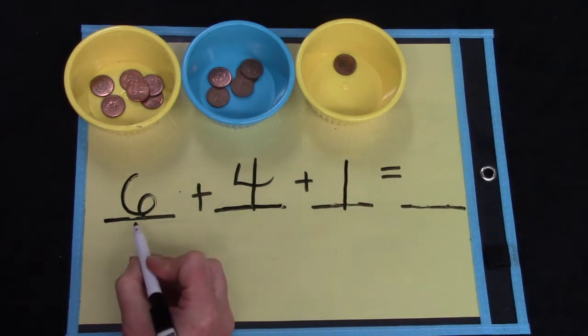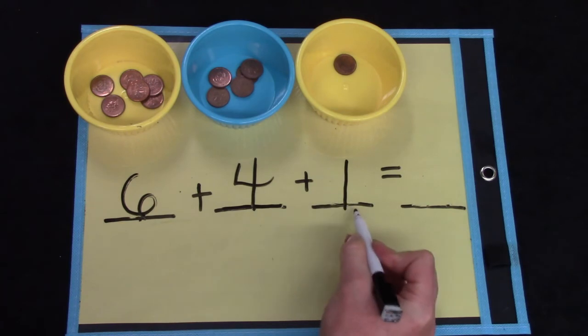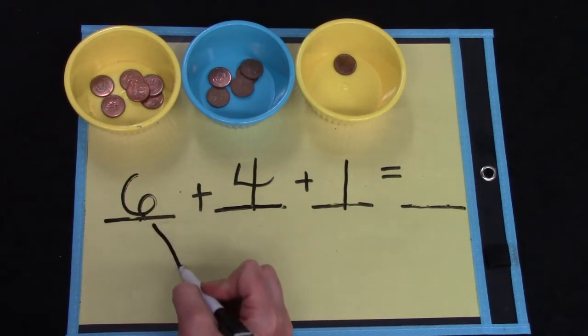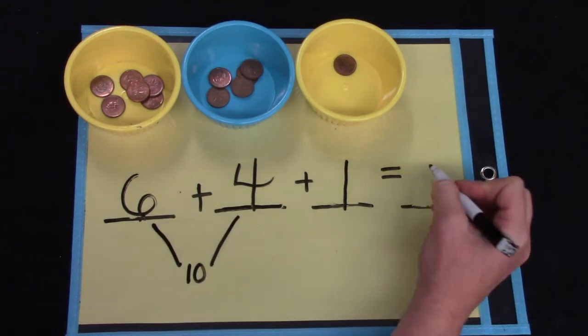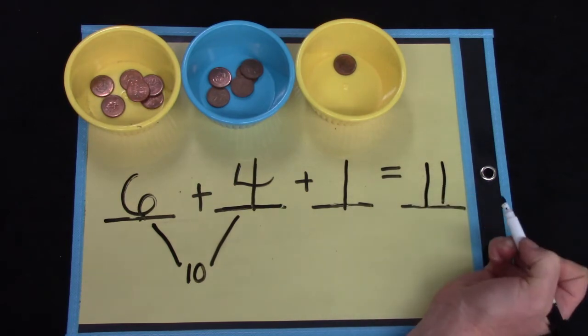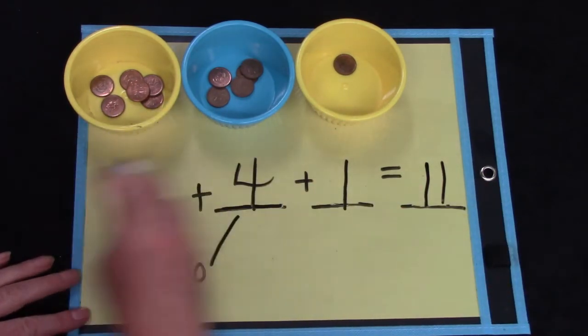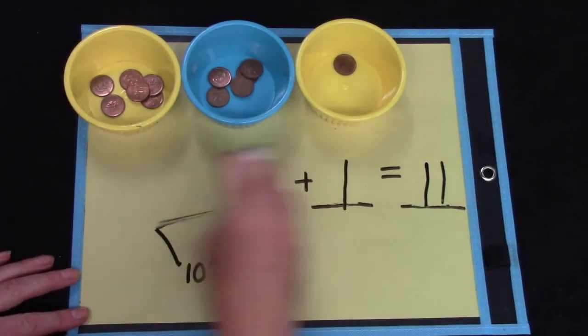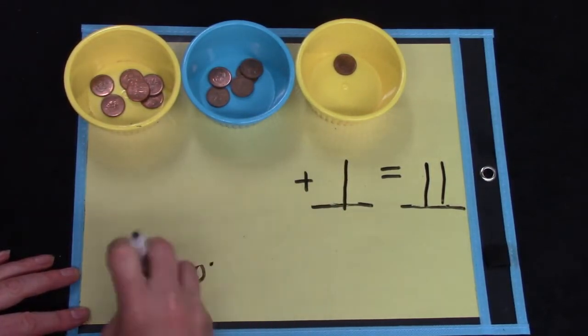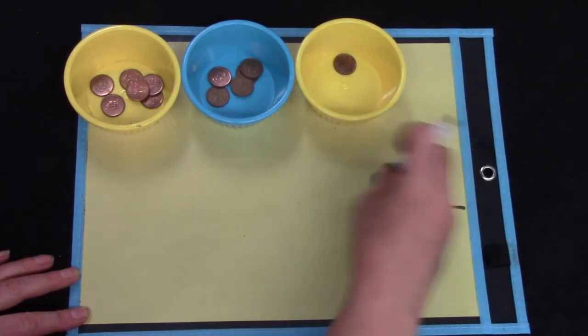Here I have six plus four plus one. Do you see two numbers that make ten? If we add six plus four, they equal ten. Ten plus one is eleven. When we're doing numbers today, I want you to try to see if you can find two numbers that when added together, they make ten.